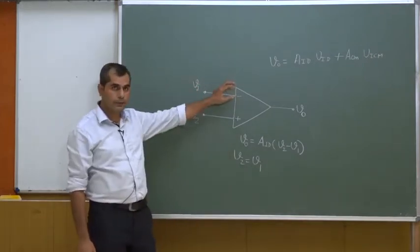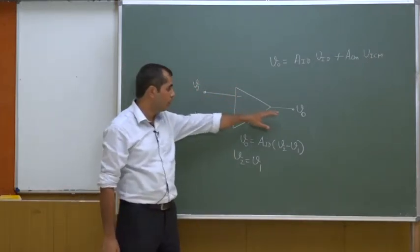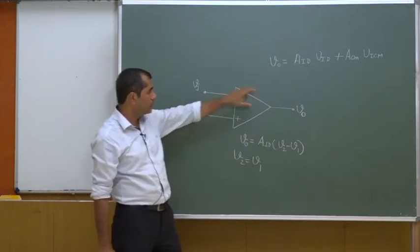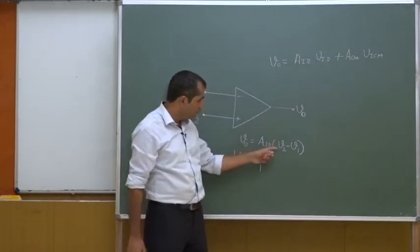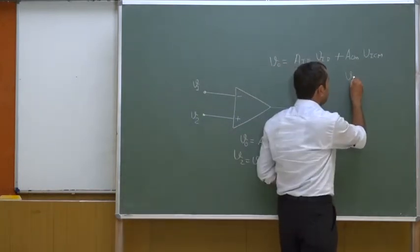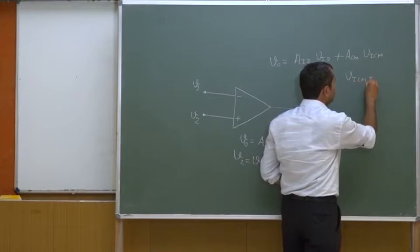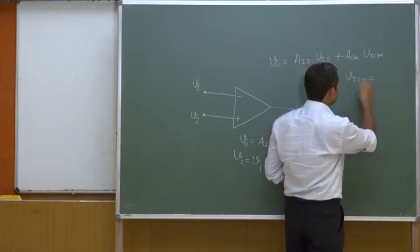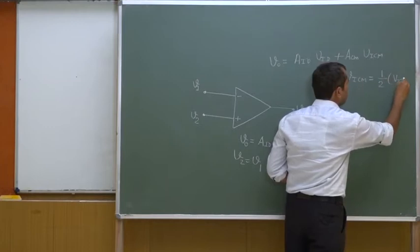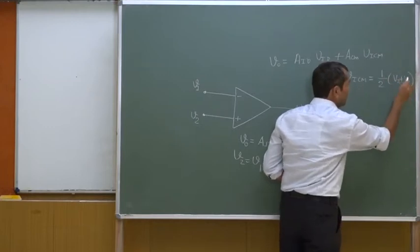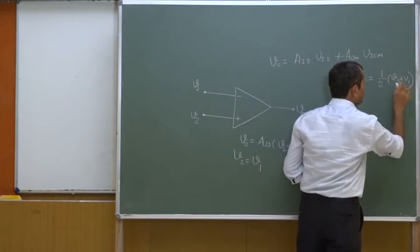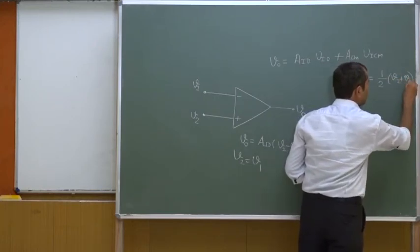This is a more general expression for the output-input relationship for a differential amplifier, where V_id equals V2 minus V1, and V_icm, the common mode input voltage, is given as half of (V2 plus V1).